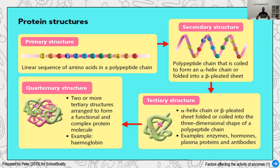The final structure is the quaternary structure, where two or more tertiary structures are combined together — you can see one tertiary, another, and so on, in this case like three or four. When they combine together they form a complex called the quaternary structure. A very common example is hemoglobin, which is the red pigment part of the red blood cells that gives blood its red color. So we can appreciate the primary, secondary, tertiary, and quaternary structures.